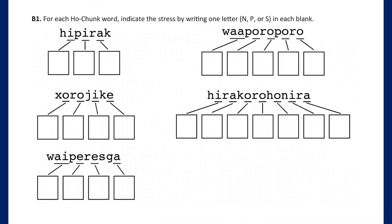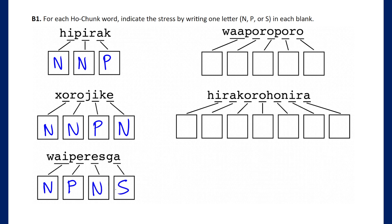Now we can fill out the words. We fill in N for the first two vowels, then P after that. For 'hi-pi-rak': neutral, neutral, primary. For 'khul-khul-hi-ke': neutral, neutral, primary, then neutral after — no fifth syllable for secondary stress. For the word with 'Y' having two vowels A and E: primary stress falls on the second syllable as our third vowel position, then neutral, then secondary.